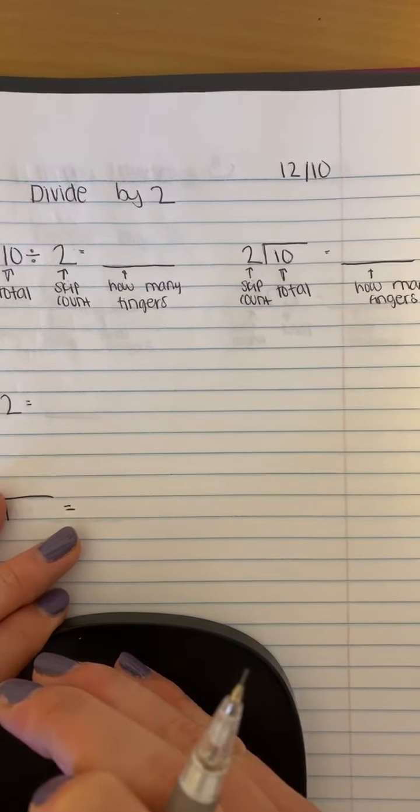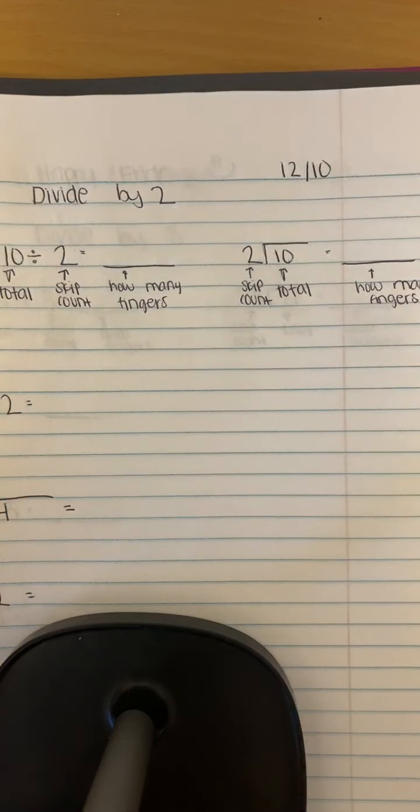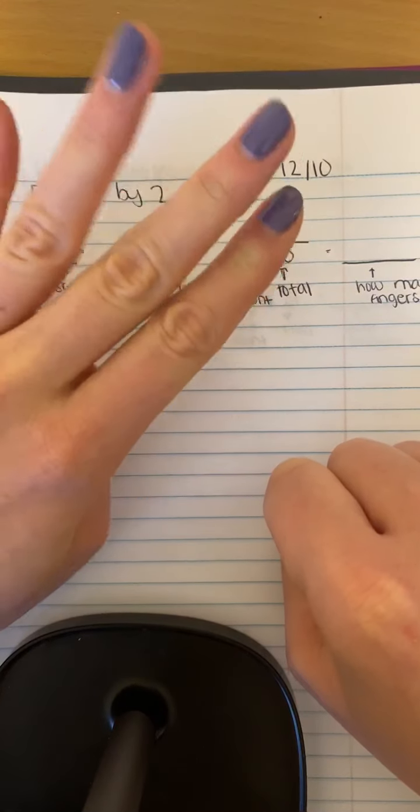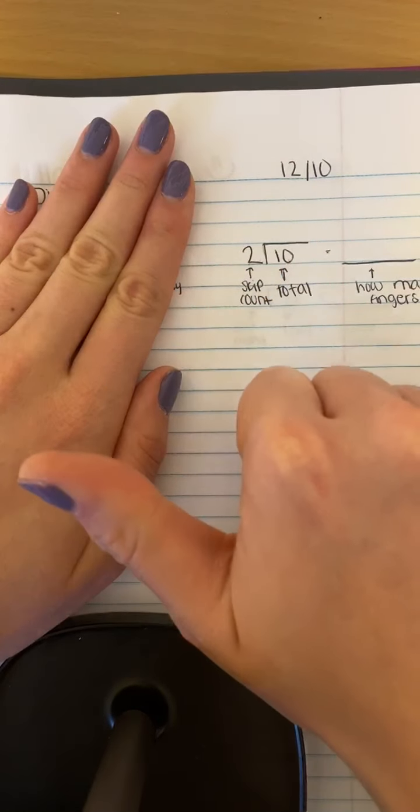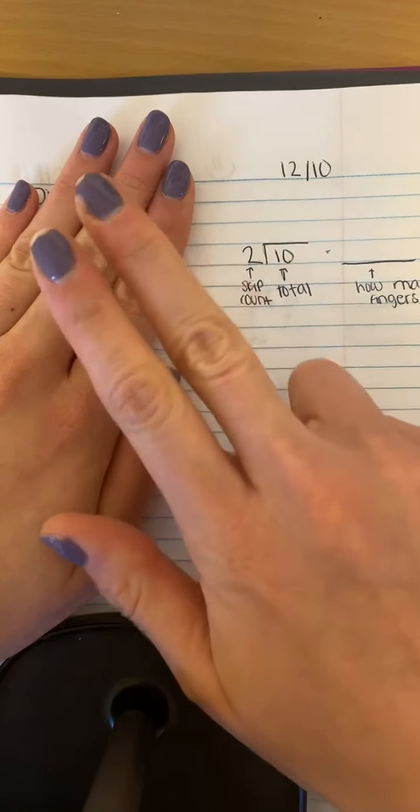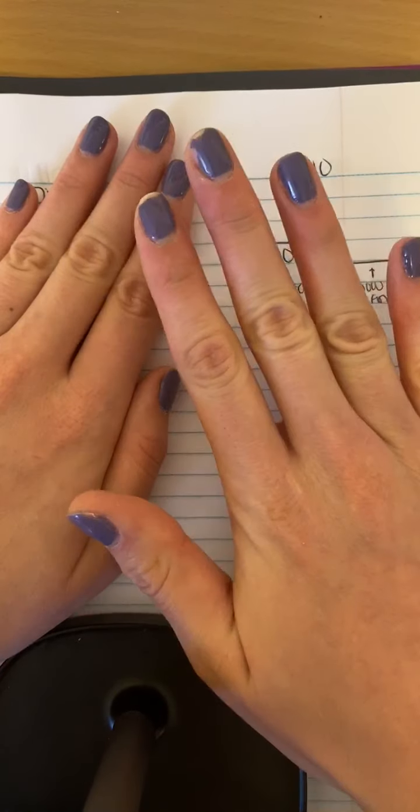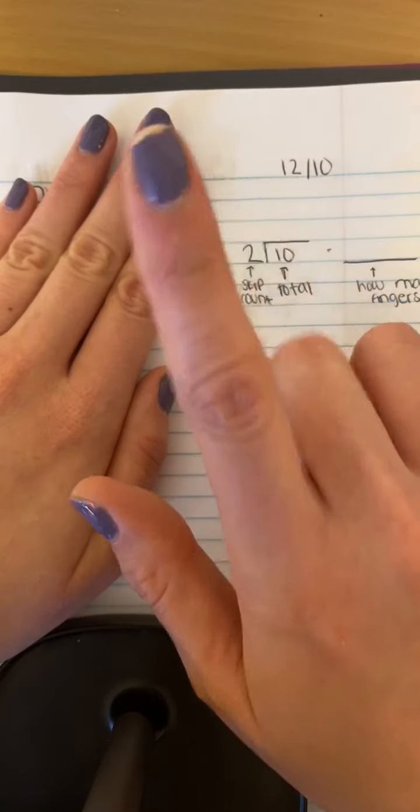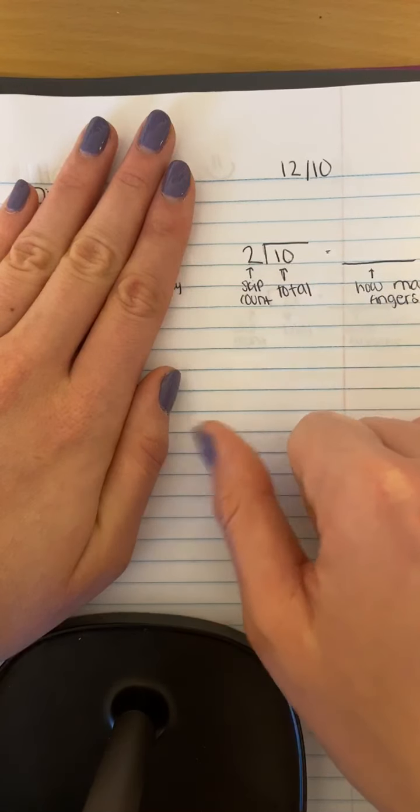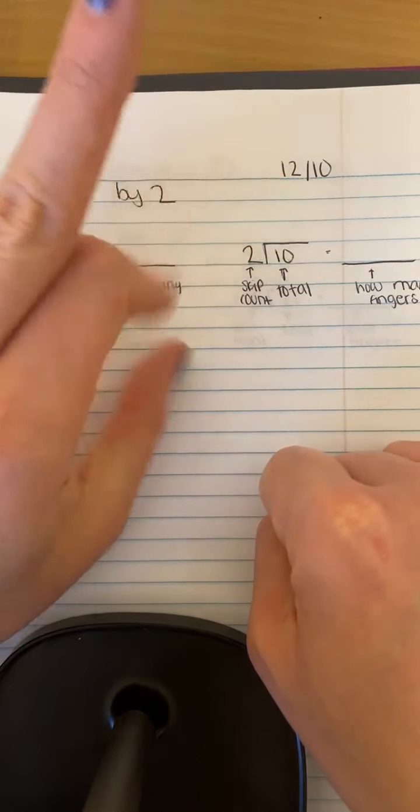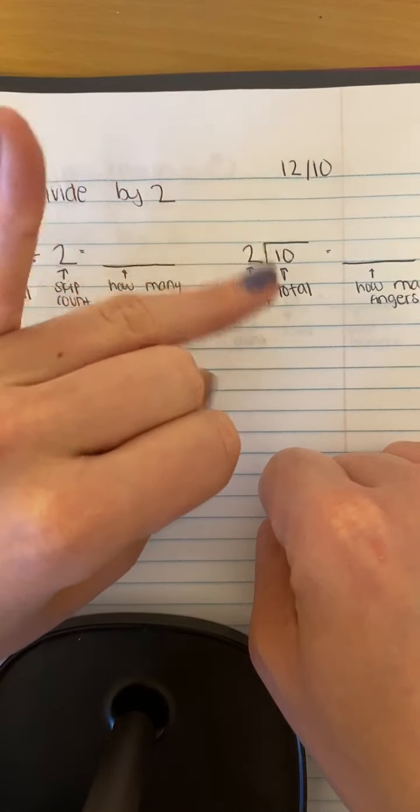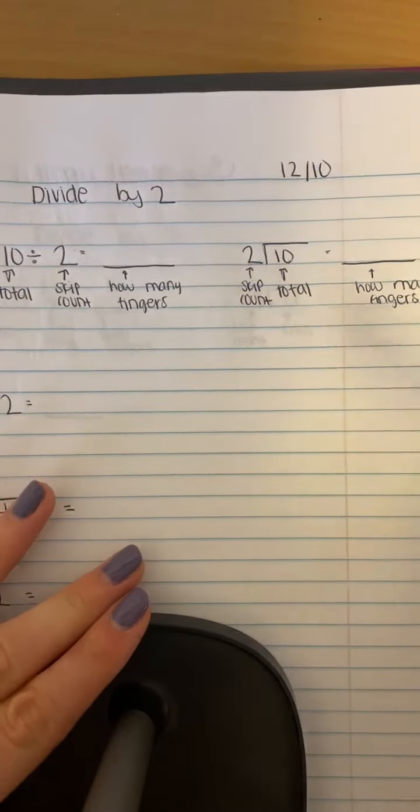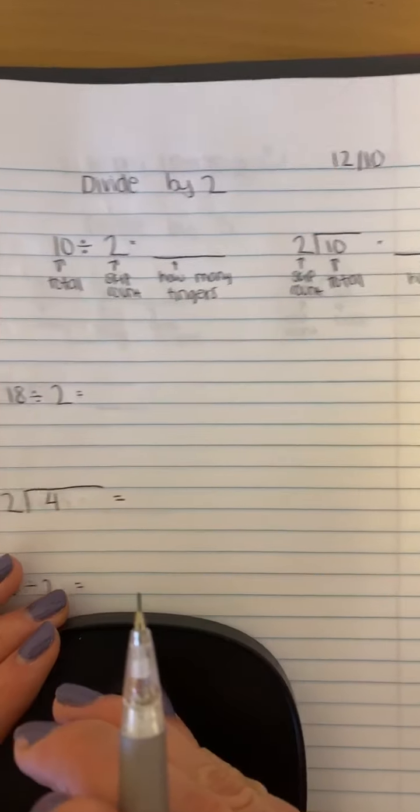So let's practice first by skip counting by twos, forwards and backwards. Two, four, six, eight, ten, twelve, fourteen, sixteen, eighteen, twenty. And backwards: twenty, eighteen, sixteen, fourteen, twelve, ten, eight, six, four, two. And again, you can write out your skip counting on the side if that helps you as well.